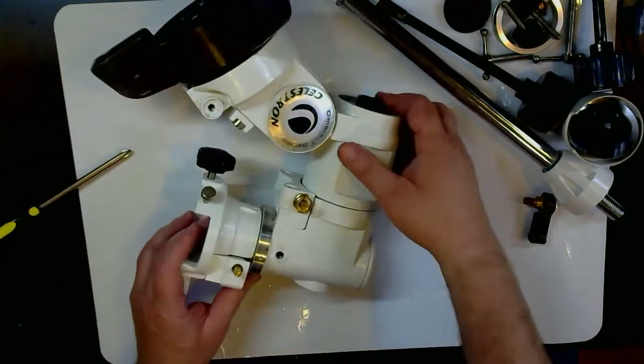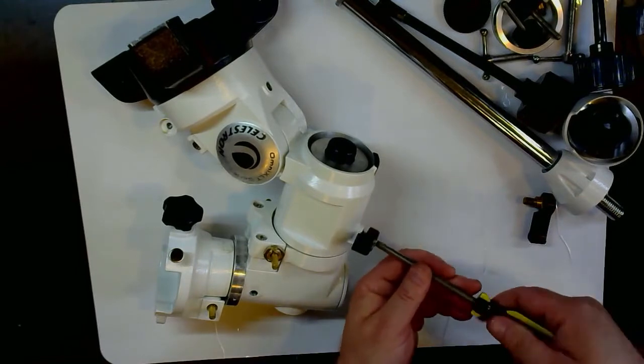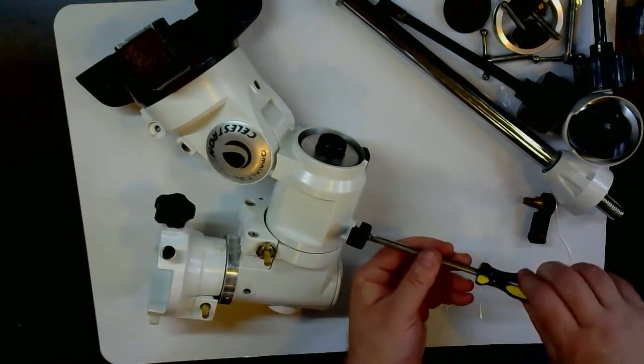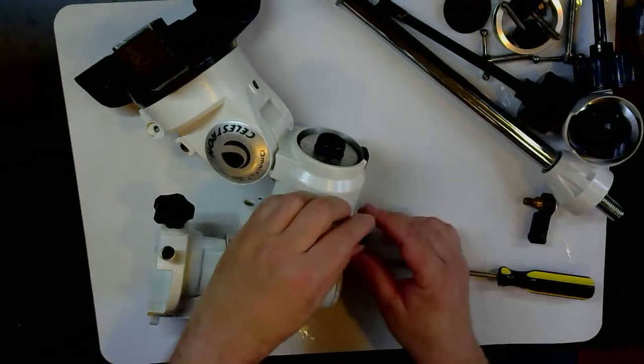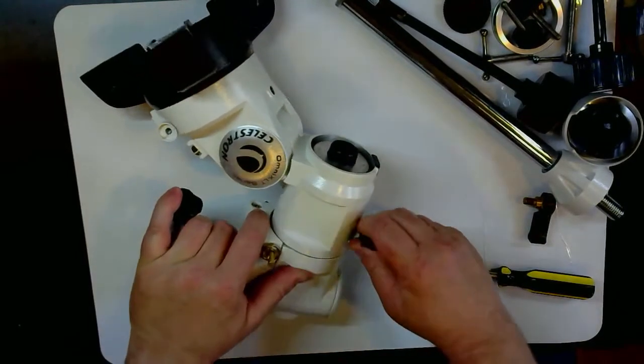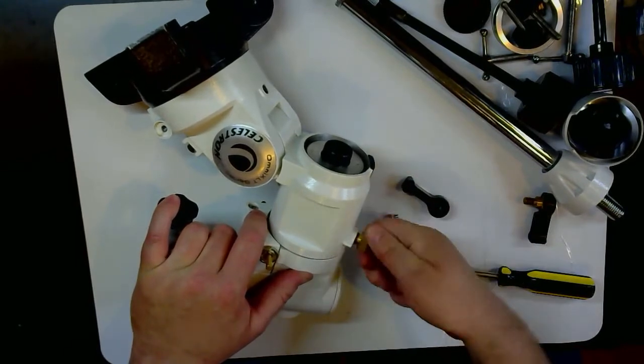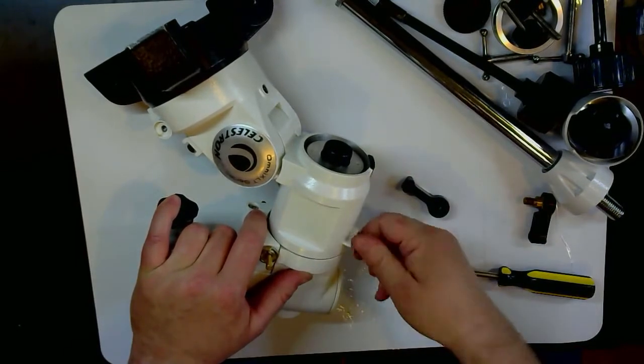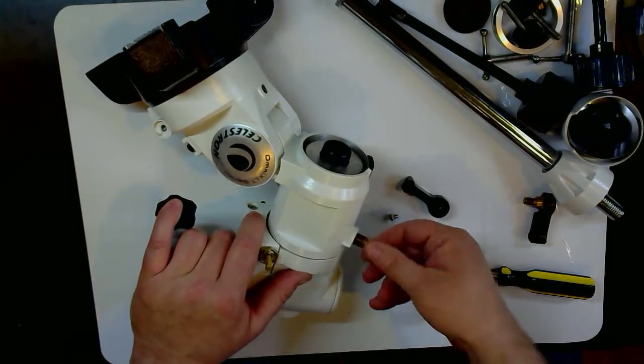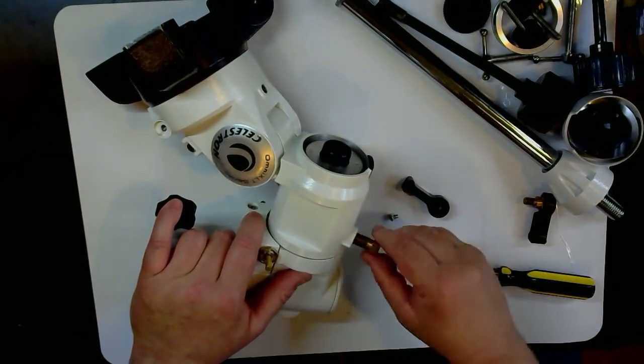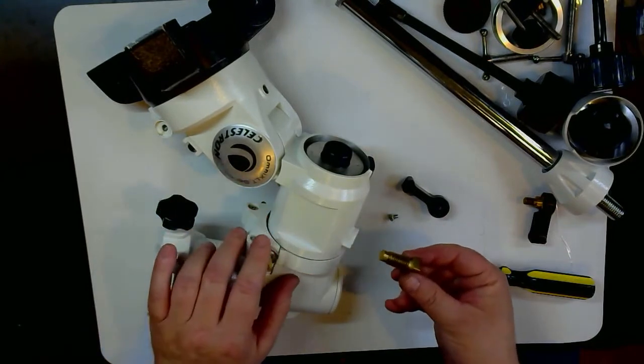Let's take the other lock assembly off. Same thing - unscrew the screw, take the cover handle off, and the inner piece. This one's really gooped up. I can feel it as I'm turning it out - it feels like it's going through glue. You'll notice this one is very, very long.